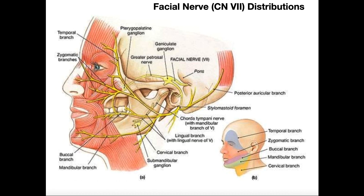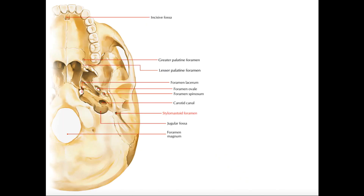Let's take a look at an inferior view of the skull. The mandible has been removed. Here's the foramen magnum for reference. You can see this little spike coming down — that's the styloid process — and then behind your ear is the mastoid process. This little hole between the styloid and mastoid processes is aptly named the stylomastoid foramen, and the facial nerve proper exits inferiorly from inside the cranium through that foramen.